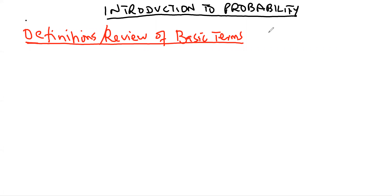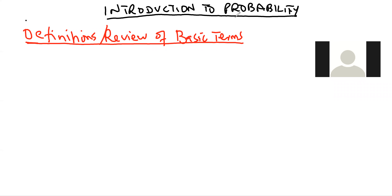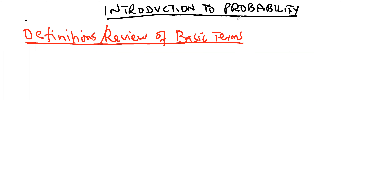Hi guys, welcome to today's class. We are looking at introduction to probability, which is the second part of this unit. The first part covered descriptive statistics — summarizing data using tables, graphs, and numerical summaries such as measures of central tendency, dispersion, skewness, and kurtosis. The starting point of probability will be a review of basic terms borrowed from set theory, before we define probability and see the various ways of calculating probabilities.